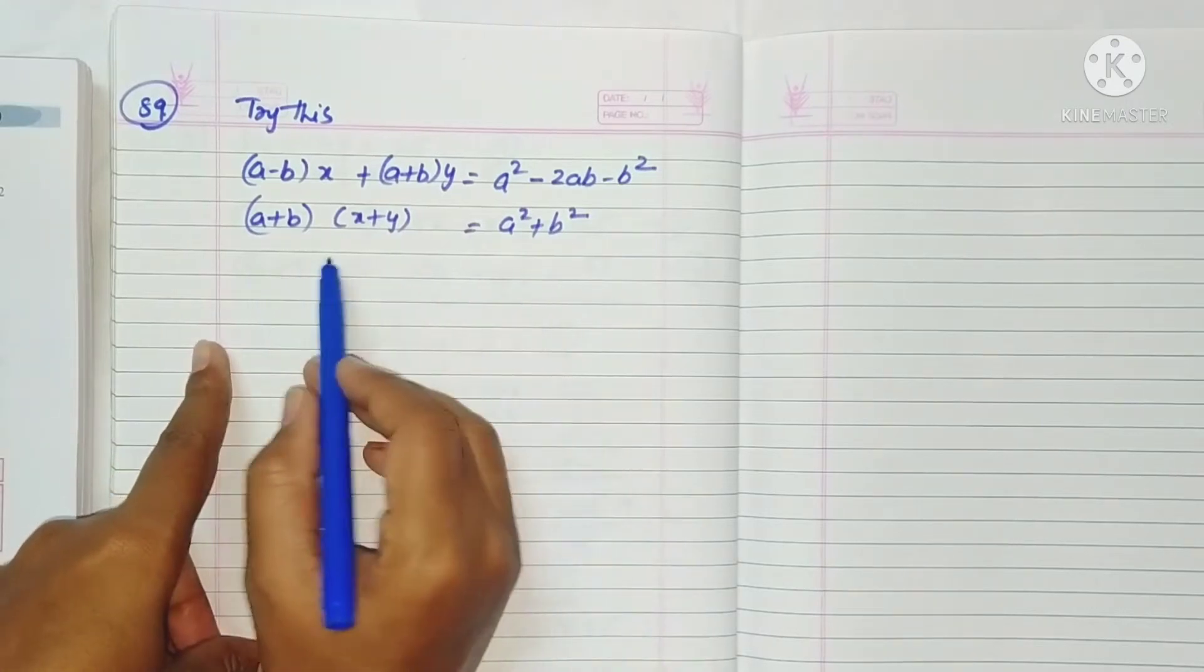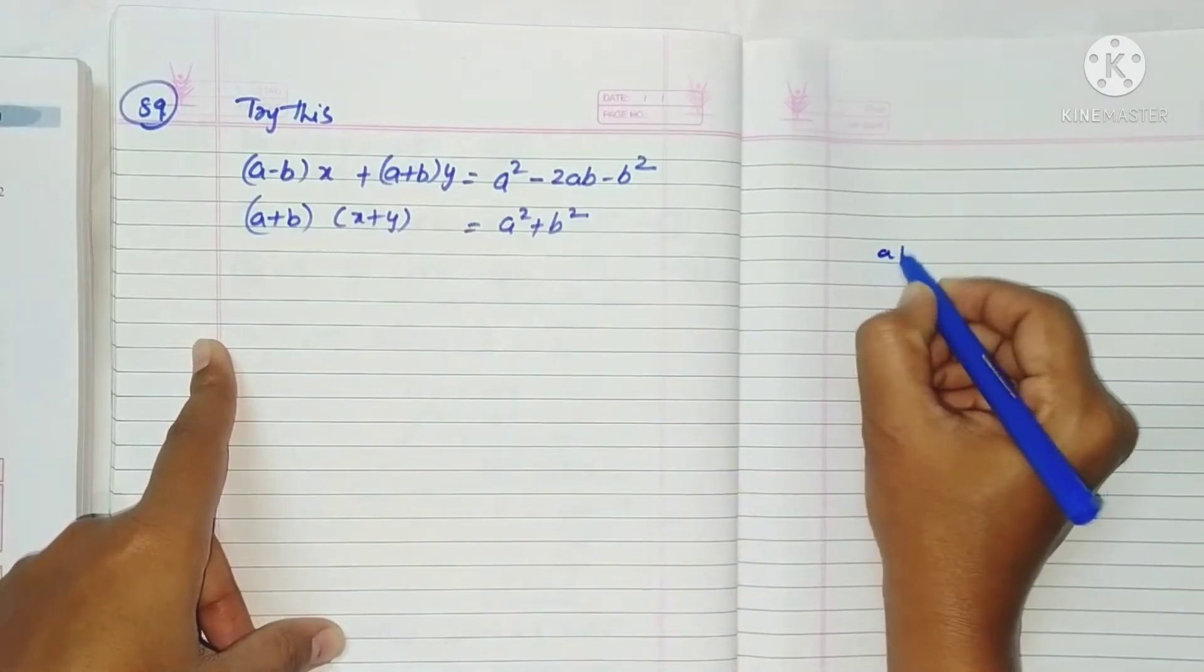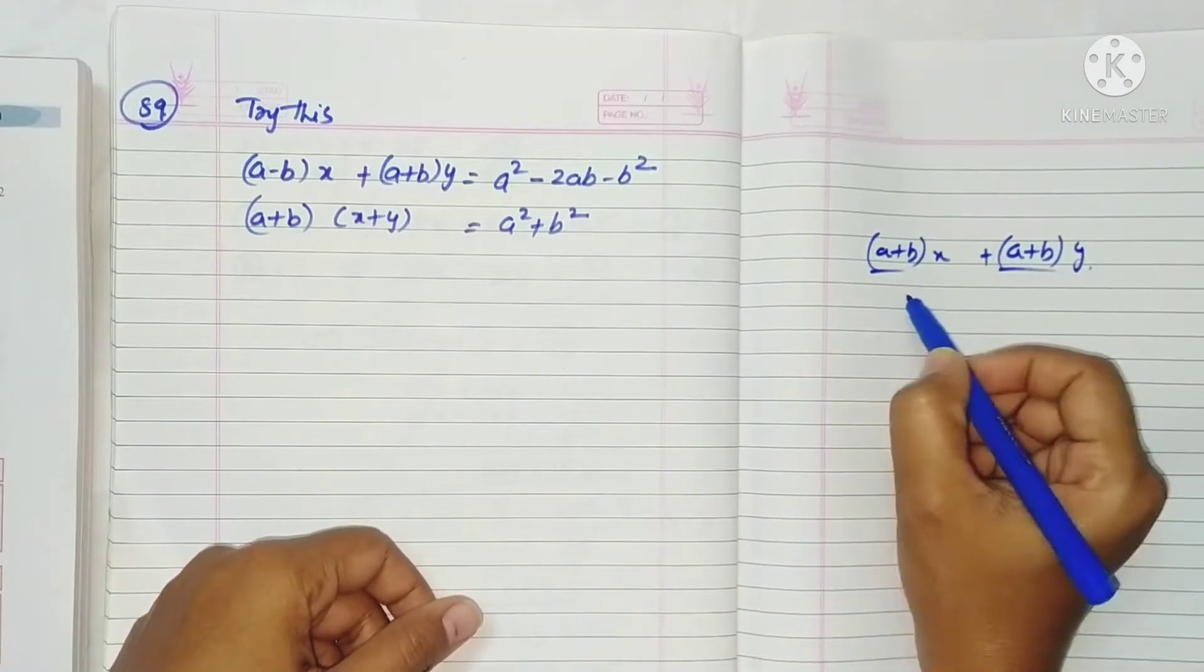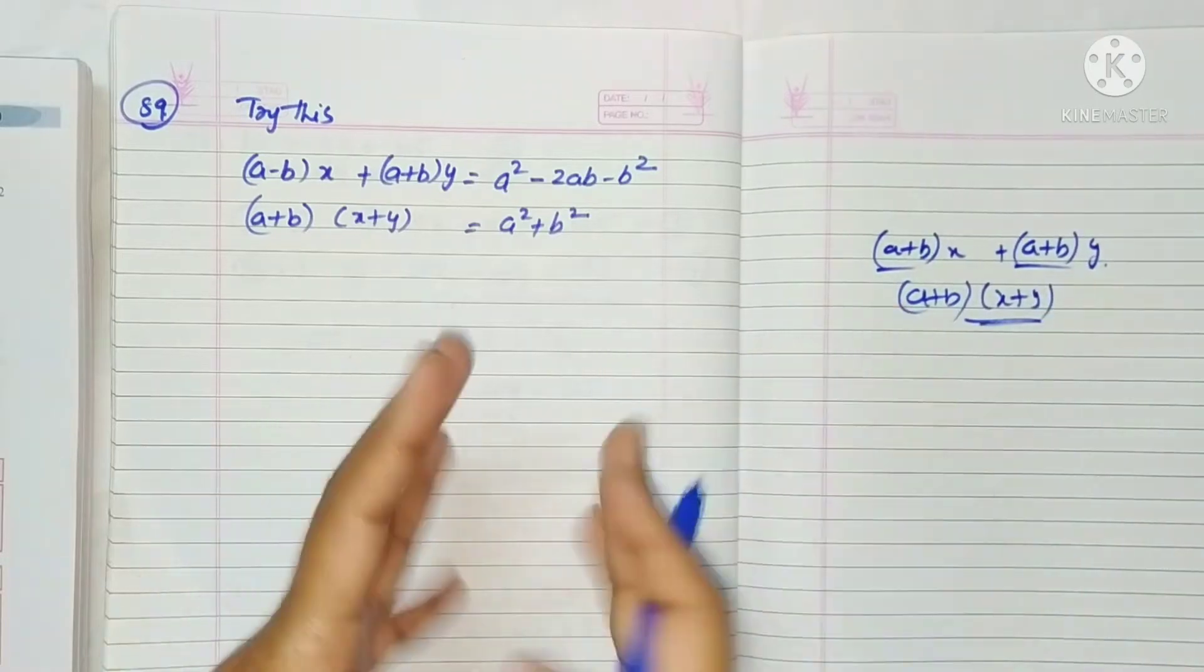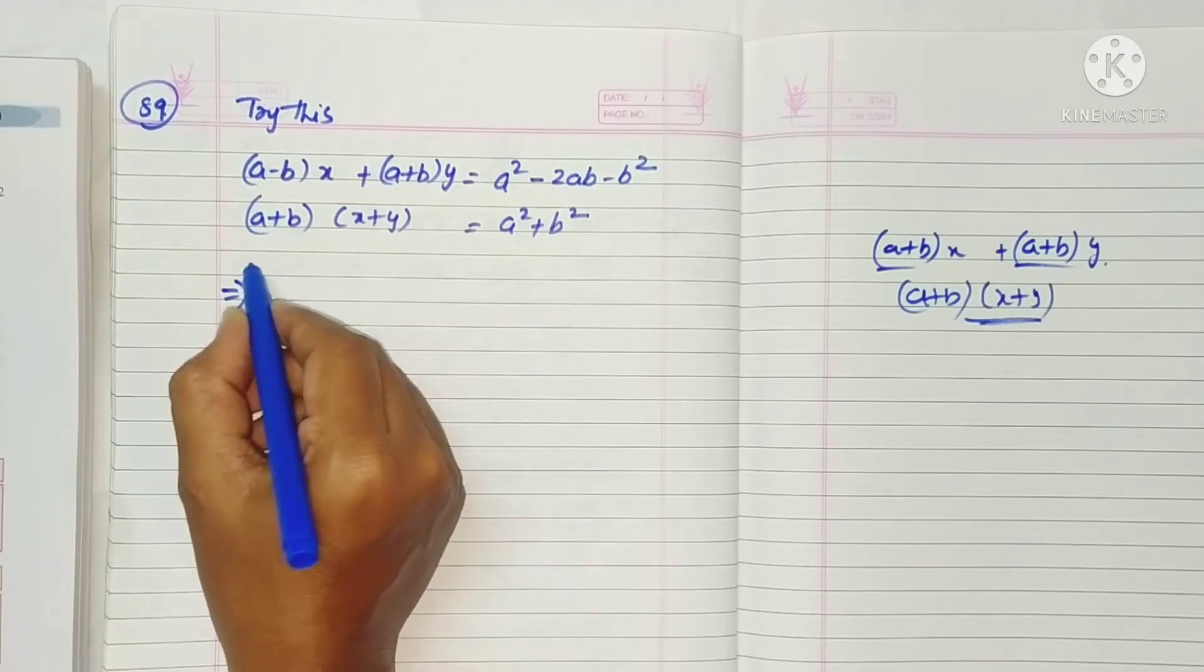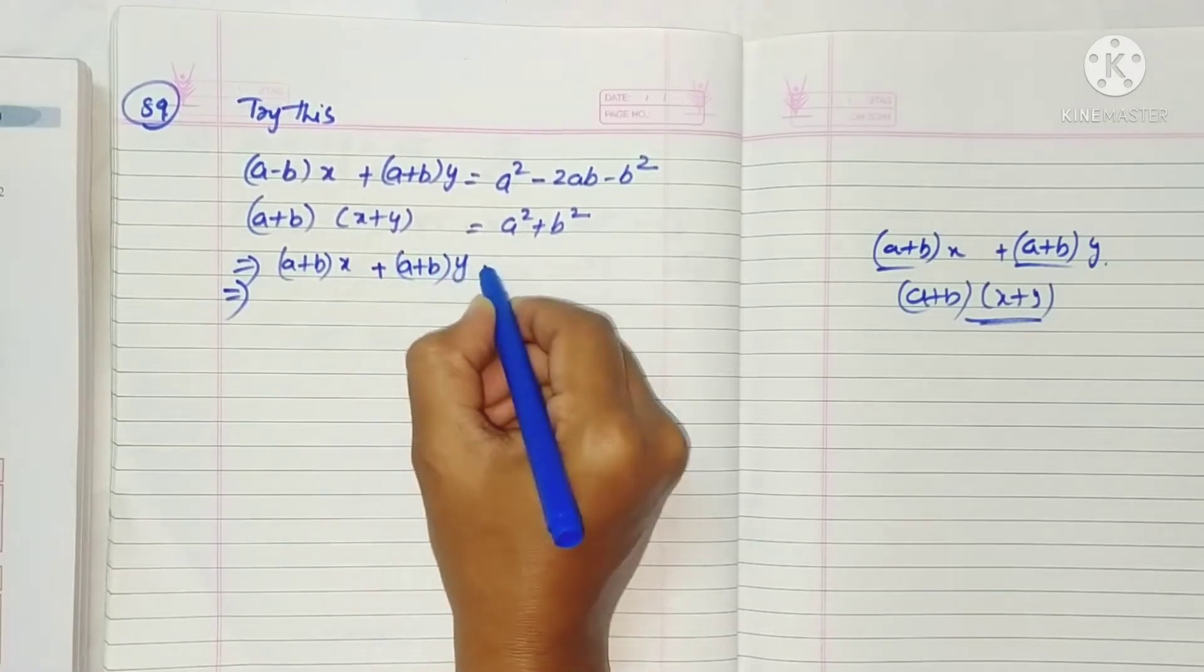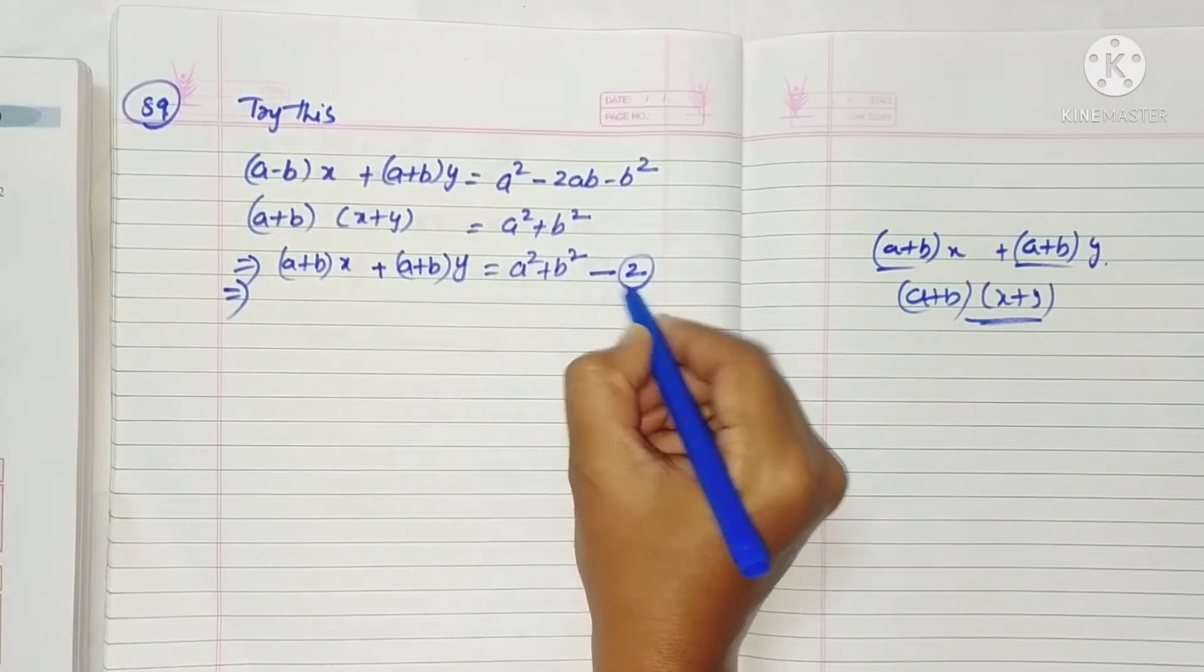See, the second equation is (a+b) times (x+y). That means we can write (a+b) times x plus (a+b) times y. So (a+b) is common. We can split this, so the equation becomes (a+b) times x plus (a+b) times y is equal to a² plus b². Let it be the second equation.